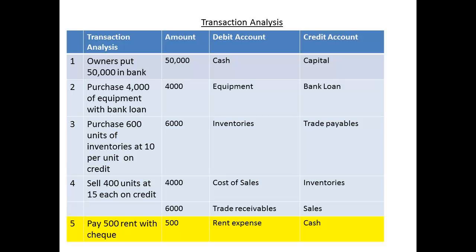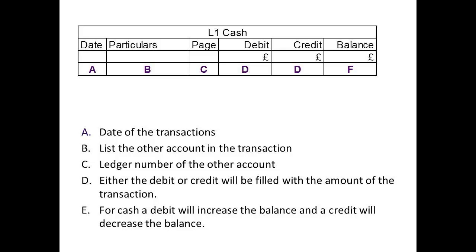We have now analysed all of our transactions and we are ready to record these to the accounts. In former times, these entries would be made to ledgers — books that recorded transactions in each account. Today, most businesses will use a computerised system, but the entries being made to the accounts are still the same. Each account entry will record five details: the date of the account, the other account in the transaction, the amount as a debit or a credit, and the balance of the account after the entry has been made.